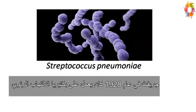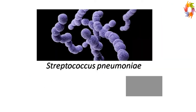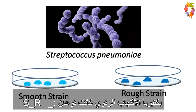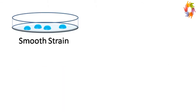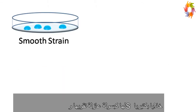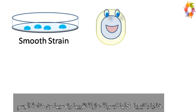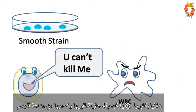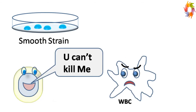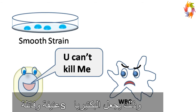Griffith in the year 1928 was working on a bacterium known as Streptococcus pneumoniae. Streptococcus pneumoniae has two types of strain: smooth strain and rough strain. Cells of the smooth strain have a protective layer known as the capsule, which protects the cells against the immune system. This makes the smooth strain highly pathogenic.